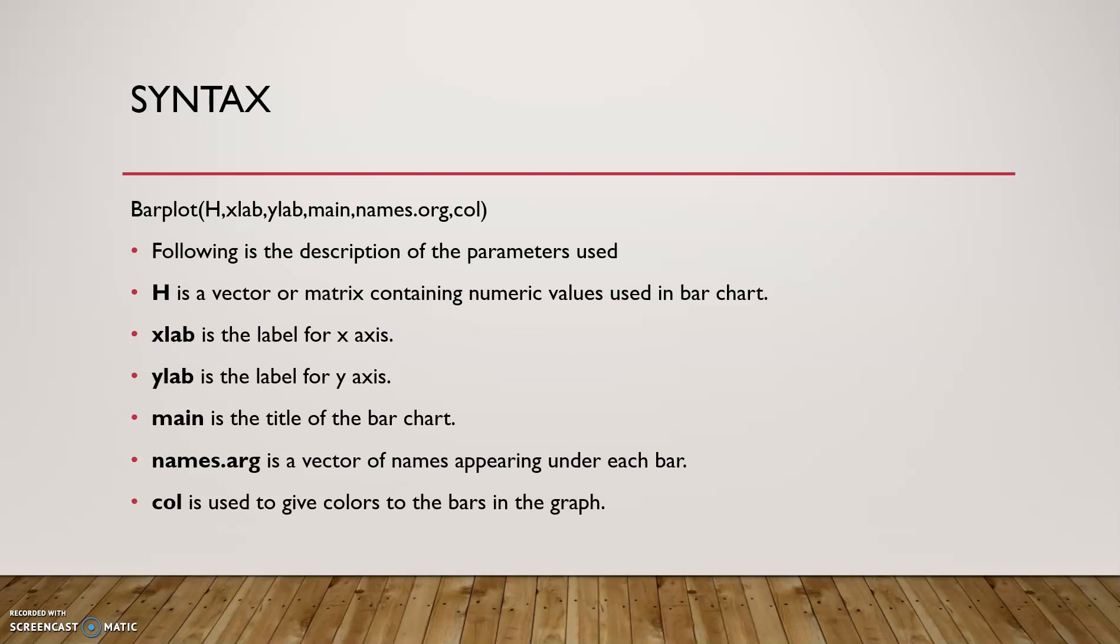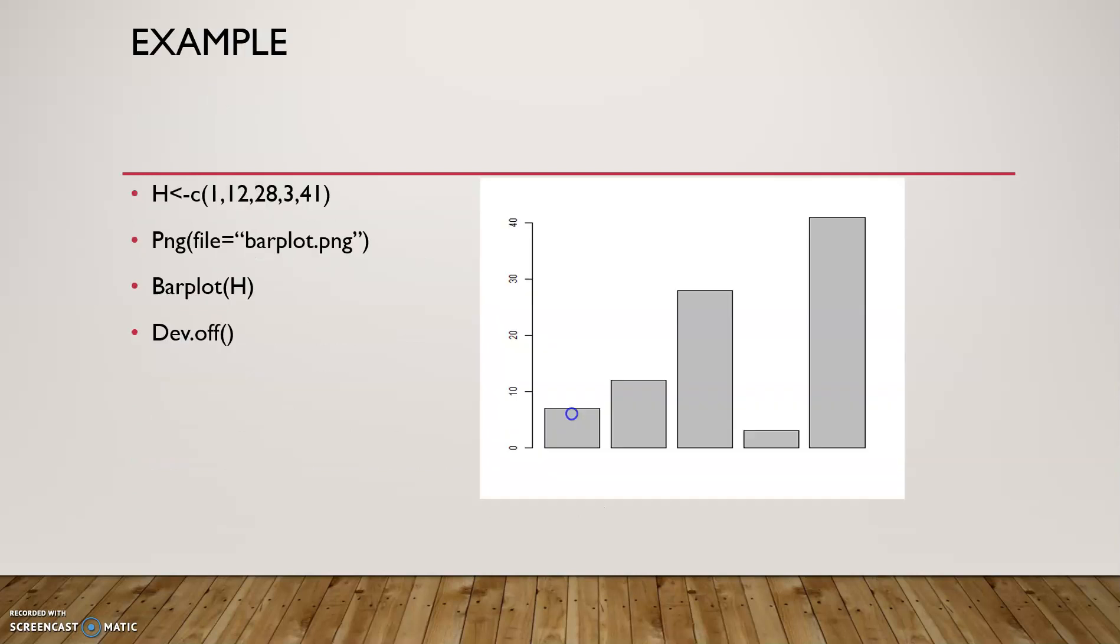Syntax of the bar chart: h is a vector or matrix containing numeric values used in the bar chart. xlab is the label for x-axis and ylab is the label for y-axis. main is the title of the chart. names.arg is vector of names appearing under each bar. col is used to give colors to the bars in the graph.